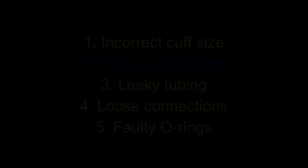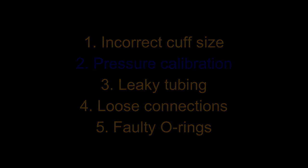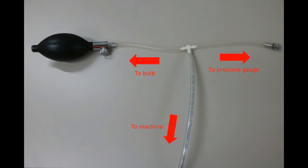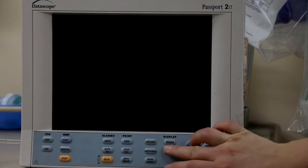Another common problem is that the NIBP machine has not been calibrated properly. In order to ensure that it is calibrated, one can use a manual NIBP device and connect it to the automated machine. This should be done using a T-connector so that the NIBP hose from the machine connects to both the bulb and the manometer gauge from the manual device.